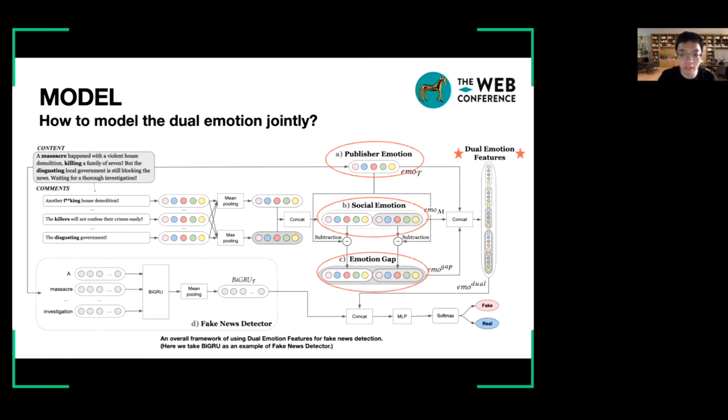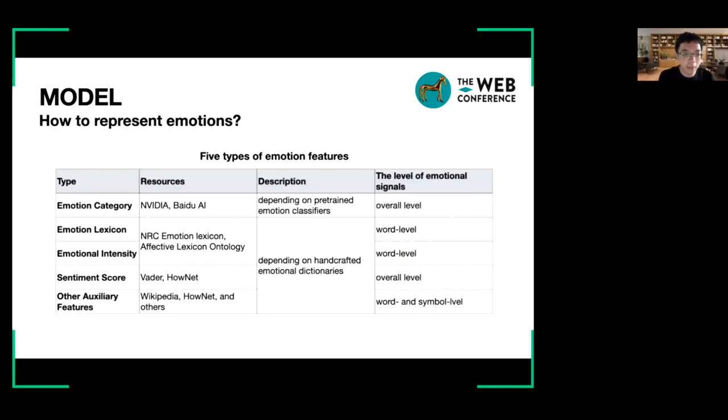Just now, I mentioned the emotion features extracted from a text. Specifically, in the paper, we represent emotions in these five types: emotion category, emotion lexicon, emotional intensity, sentiment score, and other auxiliary features. Among the five types, emotion categories leverage the external knowledge from pre-trained emotion classifiers, while others are extracted by expert emotional dictionaries. Combining them together, we can get the symbol level, word level, and overall level emotional signals for a text.